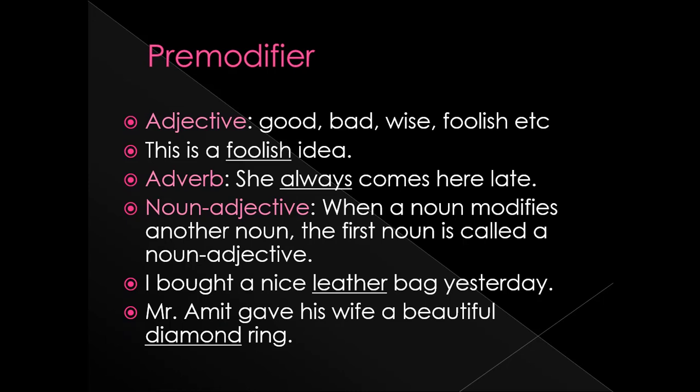After determiner, the next pre-modifier is adjective. We know that the word which modifies or describes a noun or pronoun is called an adjective — words like good, bad, wise, foolish, etc. For example: 'This is a foolish idea.' Here 'foolish' is an adjective modifying the next word 'idea.' So 'foolish' is an adjective modifier.